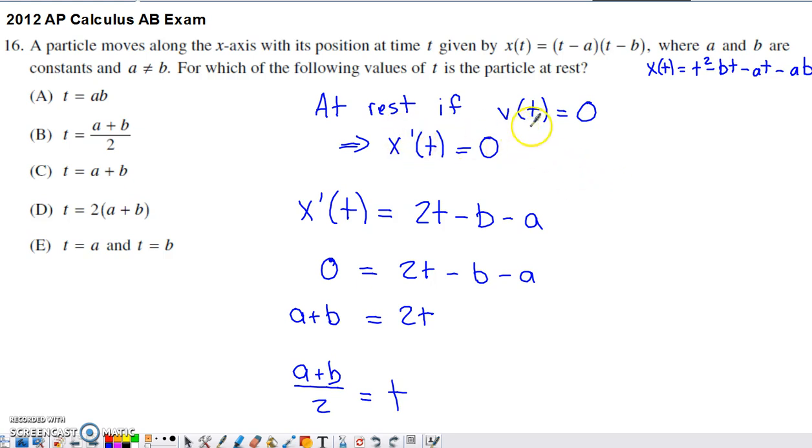The particle is at rest if the velocity is zero. You also have to recognize that the rate of change of position, the derivative of position, is velocity. So we basically just have to set our position function's derivative, our velocity function, equal to zero. I need to take the derivative of this. If I do the derivative in the form that it's presented, I'm going to have to use a product rule. When I can do something easy to avoid a product rule, I'm going to do that. I can foil this out.